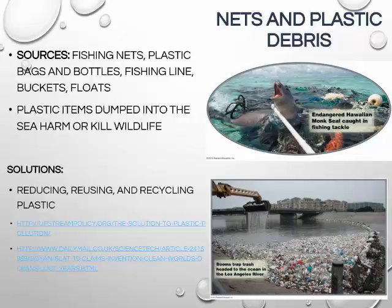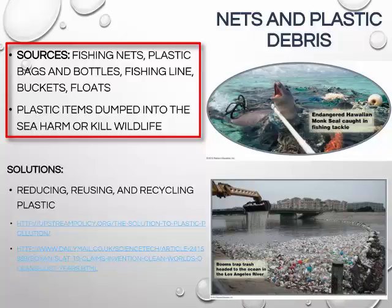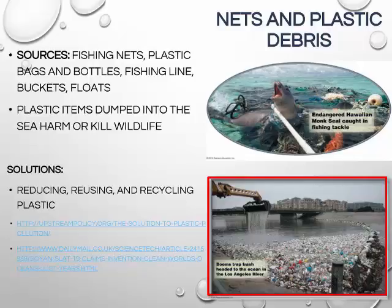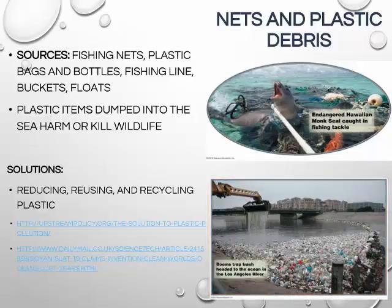Plastic is also a significant source of water pollution. Fishing nets, plastic bags and bottles, fishing line, buckets, floats, and other plastic items harm or kill wildlife. Converging ocean currents have accumulated plastic trash into the Great Pacific Garbage Patch, which is twice the size of Texas. Plastic is harmful because mammals, seabirds, and sea turtles eat plastic thinking it's food, or eat tiny particles of partially degraded plastic, which is toxic and kills them.